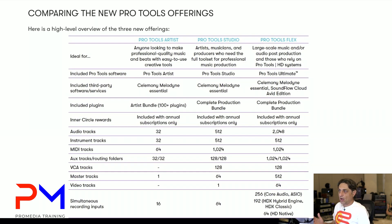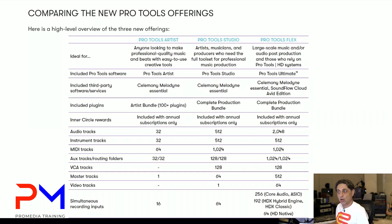All versions include Celemony Melodyne software — Melodyne Essentials — and the Pro Tools Ultimate, or Pro Tools Flex bundle as it's now known, also includes Soundflow Cloud Avid Edition. Pro Tools Artist comes with over 100 plugins called the Artist Bundle. While it doesn't have quite as many plugins as Pro Tools Studio or Pro Tools Flex, it's definitely more than enough to get you going. It has all the software instruments, EQs, Dynamics, Reverbs, Delays, and also includes the new Groove Cell and Synth Cell software.